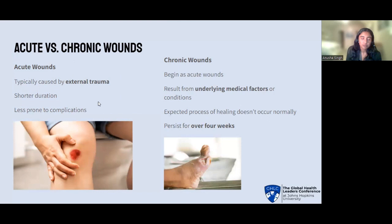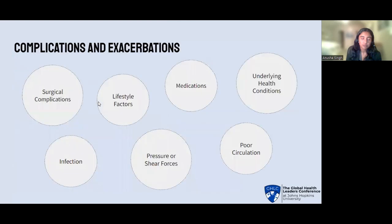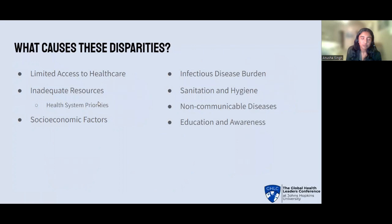This causes a spiral effect because treating these chronic wounds becomes so much more inaccessible. Complications that can cause an acute wound to turn into a chronic wound include surgical complications, lifestyle factors, certain medications, underlying health conditions such as diabetes, infection (which is much more common in developing countries), pressure or shear forces especially for elders, and poor circulation in the extremities. What makes these complications so much more common in developing countries is disparities, including limited access to healthcare, inadequate resources due to imbalances in health system priorities or socioeconomic factors, the burden of infectious disease, lack of sanitation and hygiene, non-communicable diseases, and a lack of education and awareness.